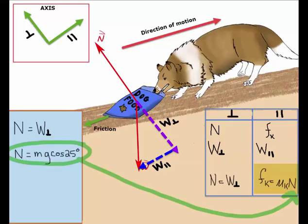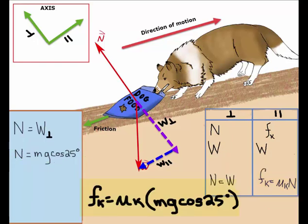Since we have N in both formulas and we are looking for the coefficient of friction, we can substitute N equals mg cos 25 degrees into our friction formula. Once we do this, we only have one formula to work with. So that is it for now. I hope you found this video helpful.